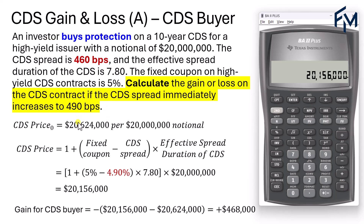To calculate the gain, we take the difference in price. We take the new price of $20,156,000 minus the initial price. Because it's a short position, we insert a negative sign at the front. The difference is negative, so a negative multiplied by a negative becomes a positive. The CDS buyer would have a mark-to-market gain of $468,000.